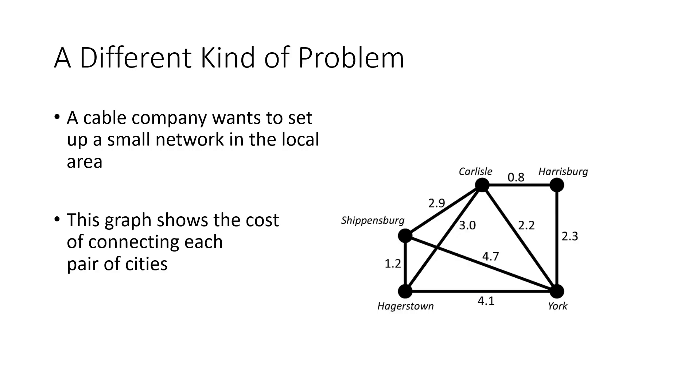We're going to be talking about a different kind of problem in this section. As an example, let's imagine that a cable company wants to set up a small network in the local area. So we've got five towns: Shippensburg, Carlisle, Harrisburg, Hagerstown, and York. We have costs here, so we have a labeled graph. The graph has numbers on the edges. In this case, the labels show the cost of connecting each pair of cities.